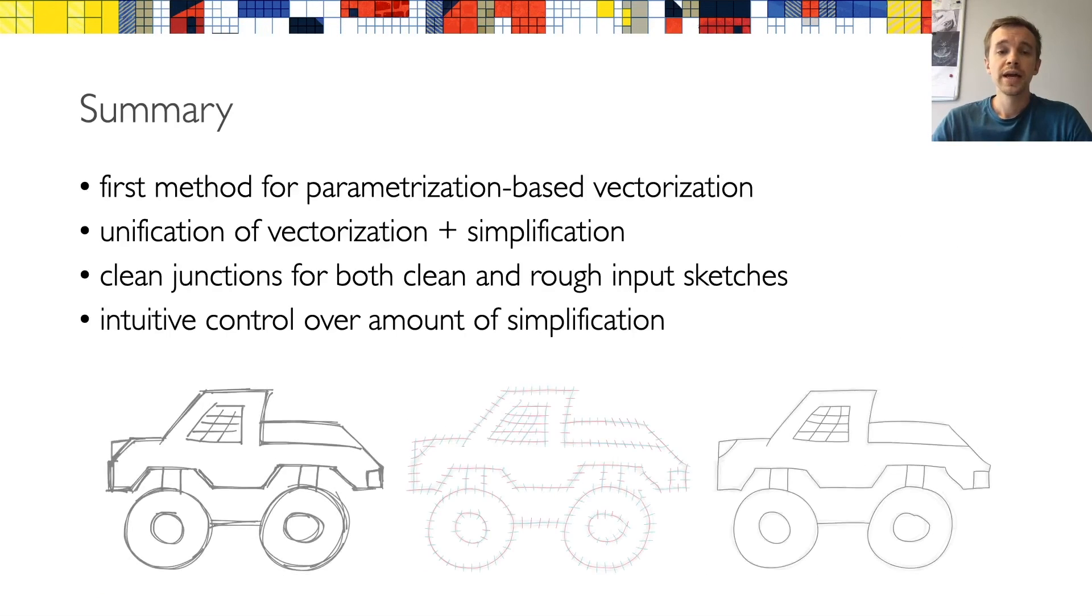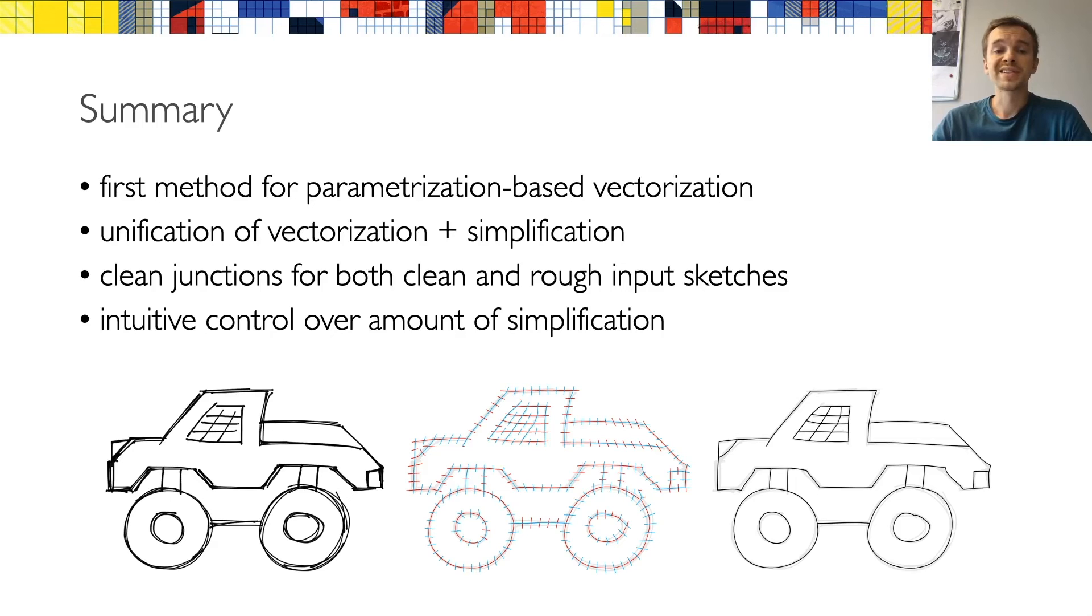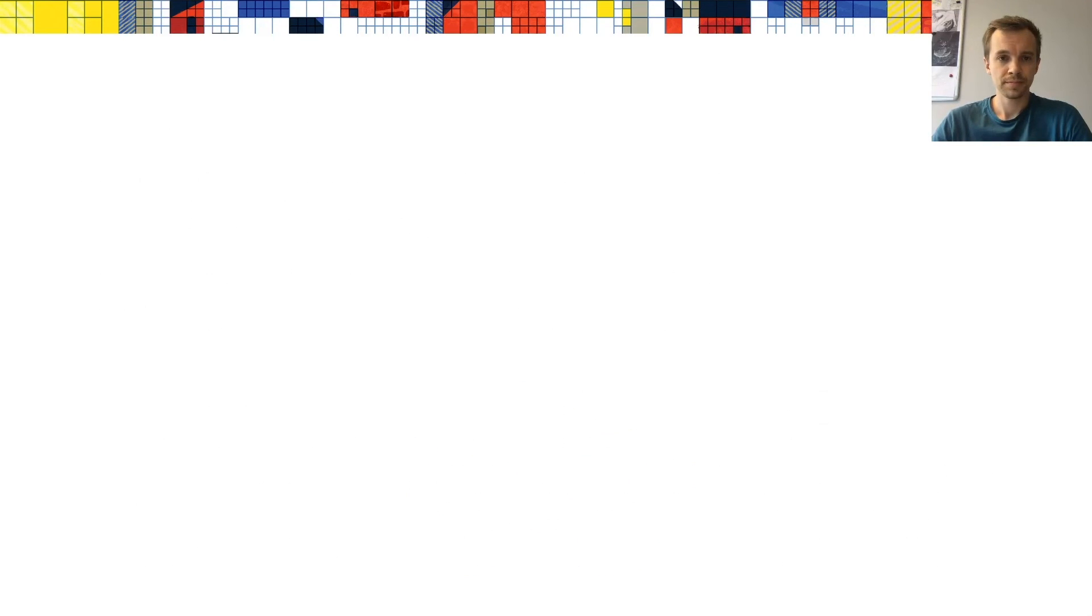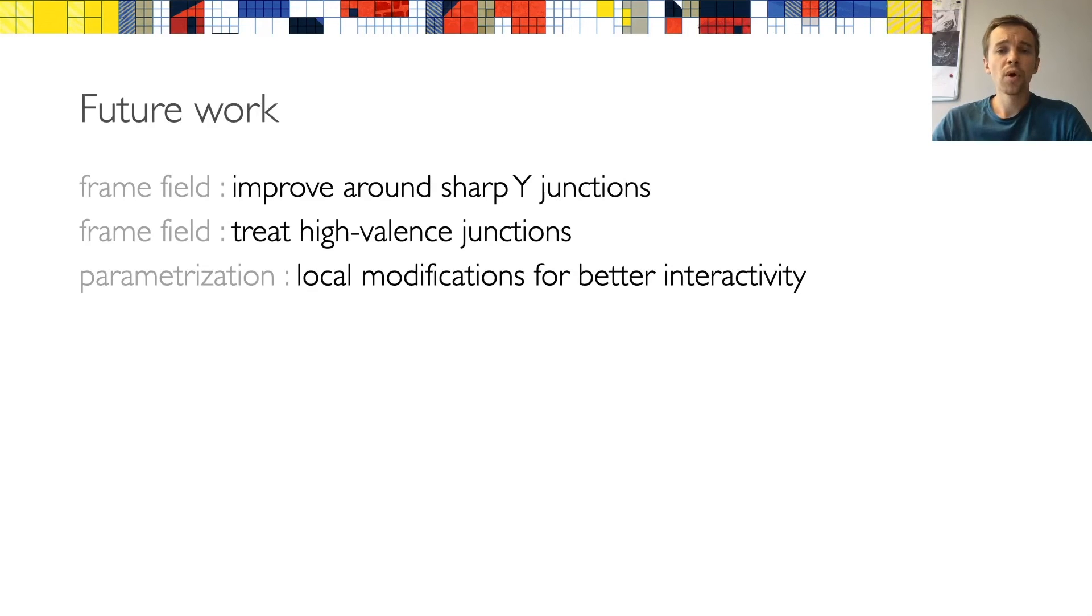In conclusion, in this work, we drew a parallel between parameterization-based quad meshing and sketch vectorization. Our approach enables joint vectorization and simplification of over-sketched inputs, providing clean junctions even in the presence of multiple overlapping strokes. We also provide intuitive control over the scale under which strokes are merged.